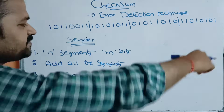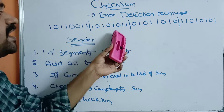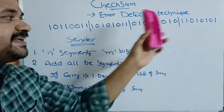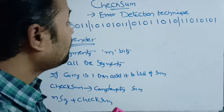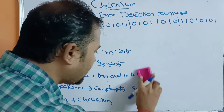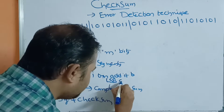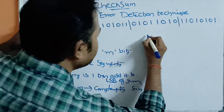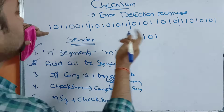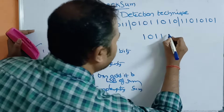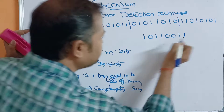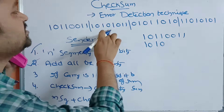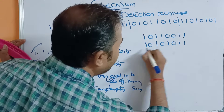Now let us go through the actual example. The 32-bit message is divided into 4 segments, each of 8 bits. The first segment is 10110011, the second segment is 10101010, and the third begins with 1011.